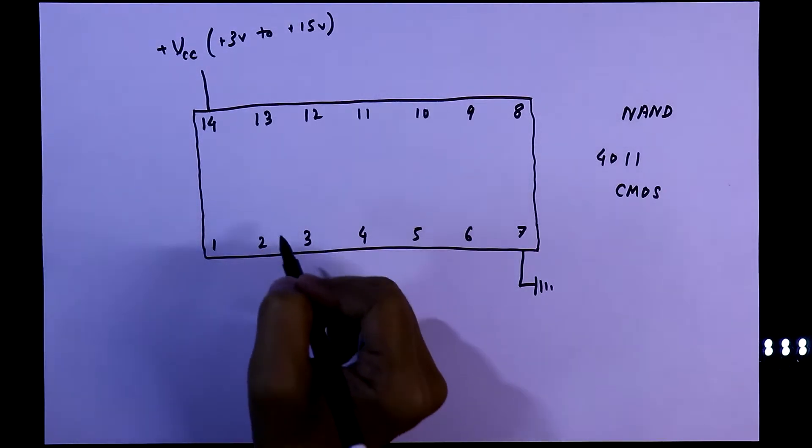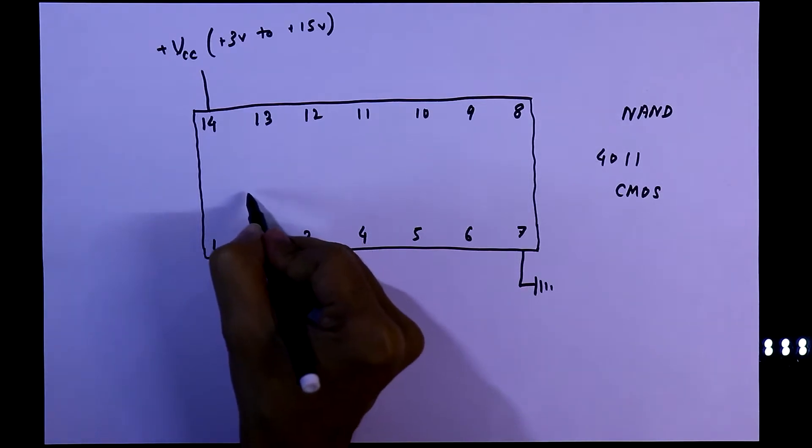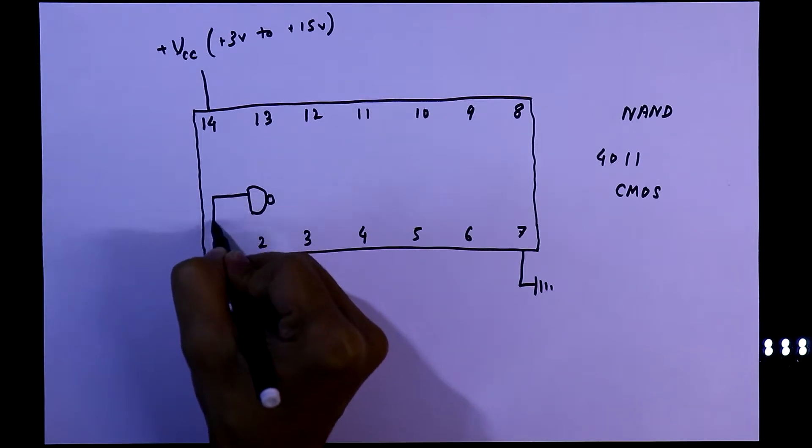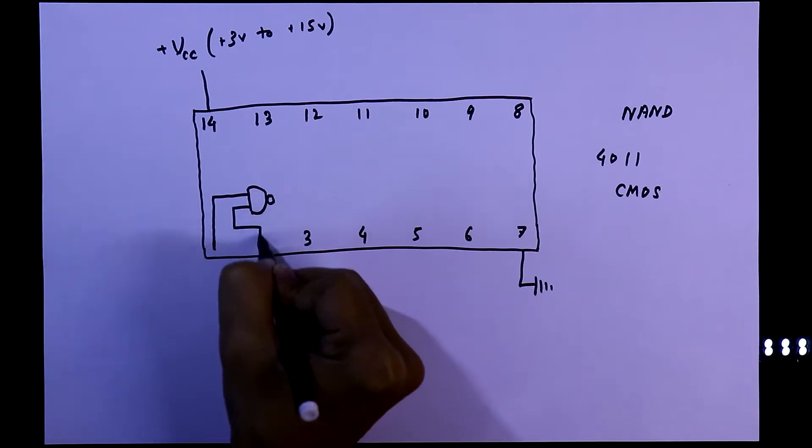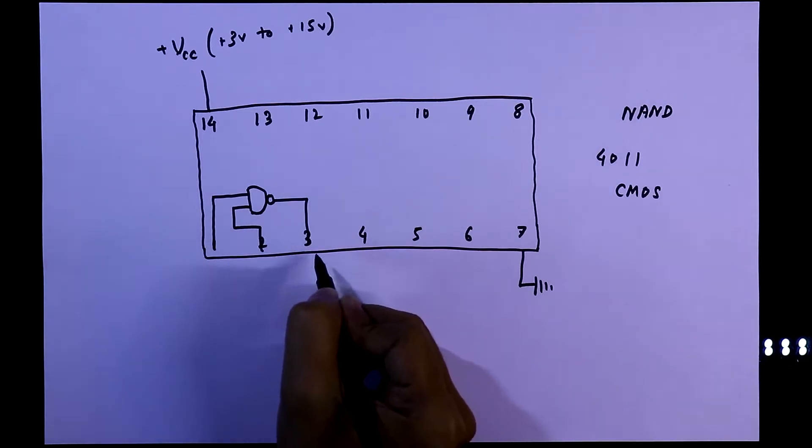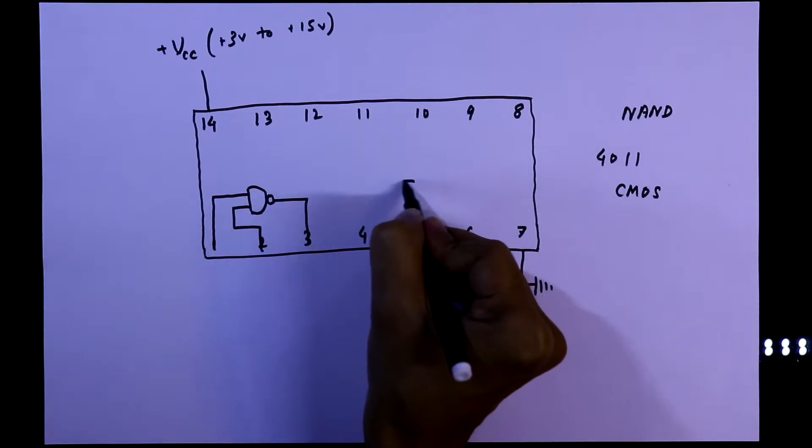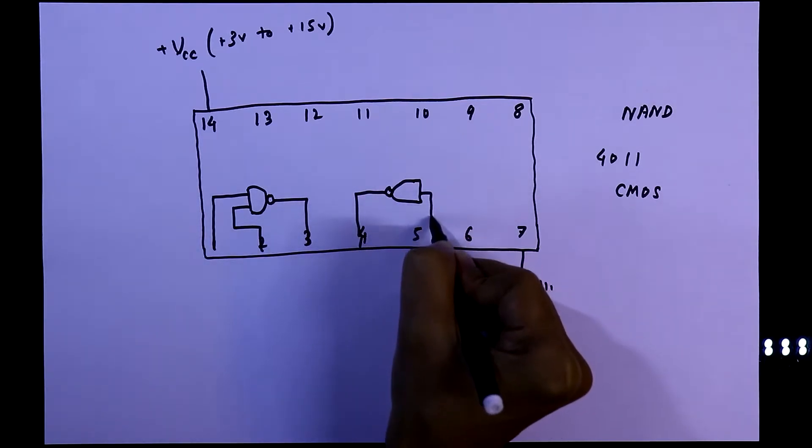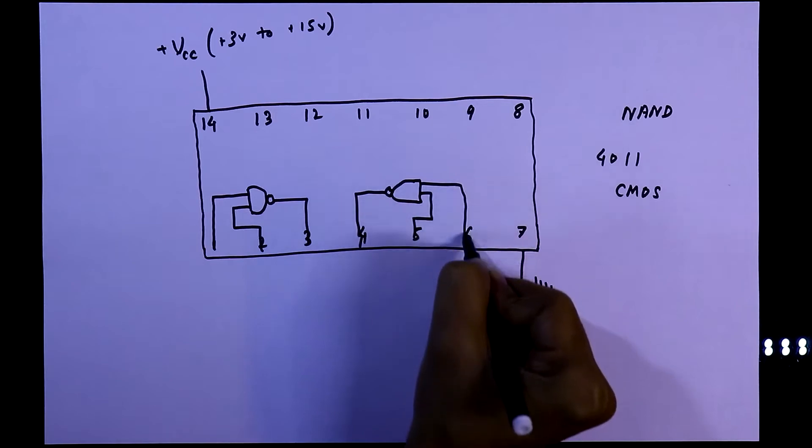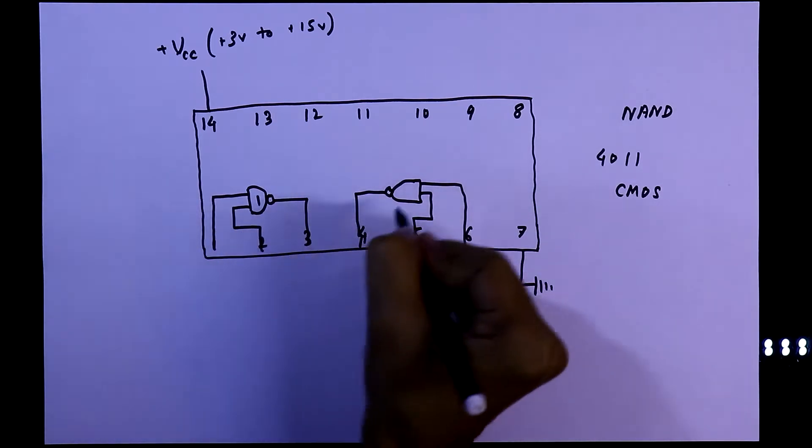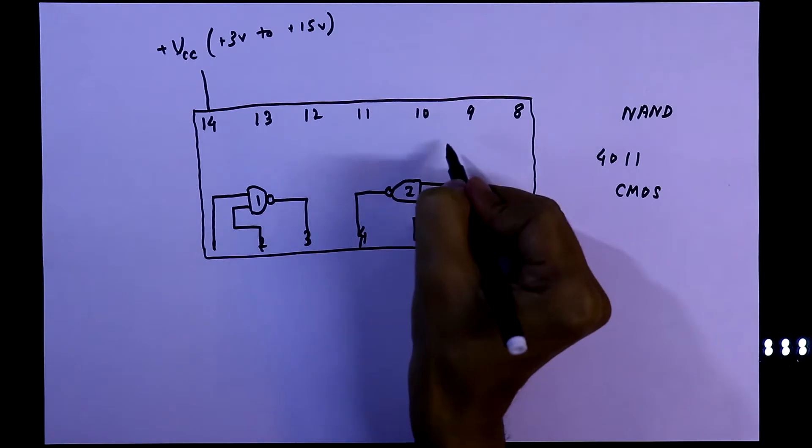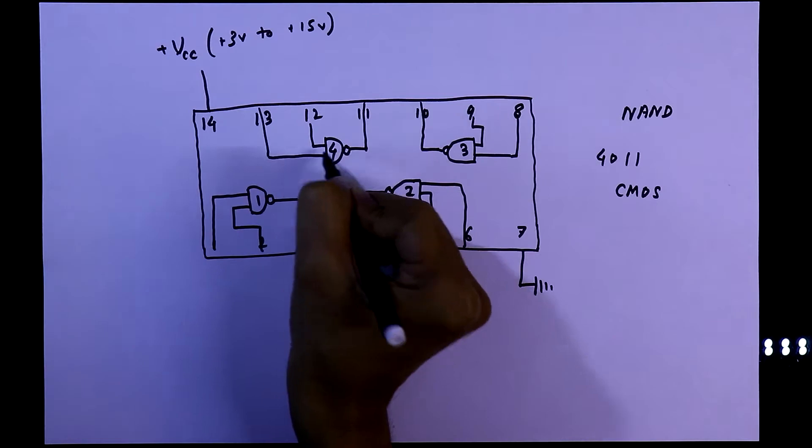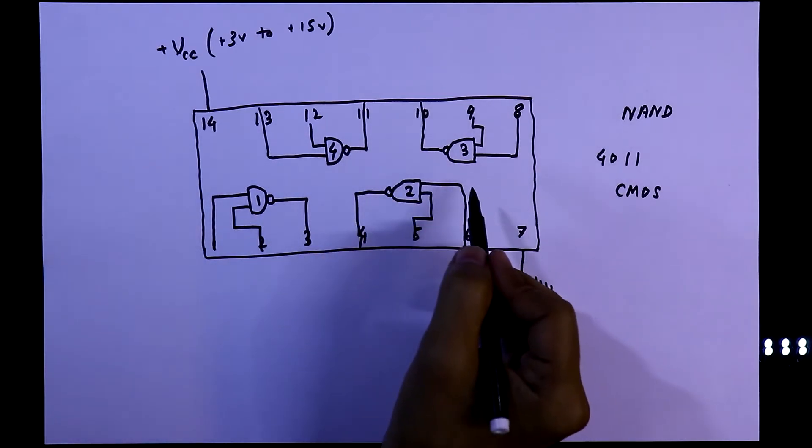Now it has 4 NAND gates. It is NAND gate 1, here is input 1, input 2, and this is the output 1. Here's another gate. This pin number 4 is output. Pin number 5 is input 1 and this is input 2. It is gate number 1, gate number 2, here NAND gate 3, this is gate number 4. So these are all 4 NAND gates.